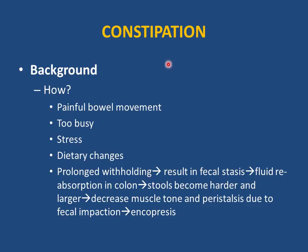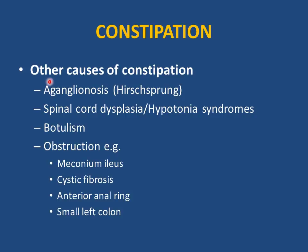Constipation develops when the child has painful bowel movements, is too busy, has stress, or changes in diet — anything preventing use of the bathroom. This leads to prolonged withholding, fecal stasis, fluid reabsorption, harder and drier stool, decreased muscle tone, decreased peristalsis, and fecal impaction. Liquid stool passes around the impaction causing encopresis, which parents may mistake for diarrhea. Always ask about constipation history. Other causes: Hirschsprung disease (ask about delayed meconium past 48 hours), spinal cord dysplasia, hypotonia, and infant botulism.